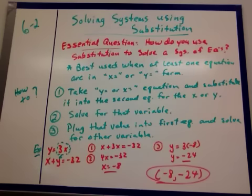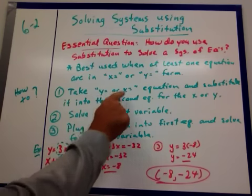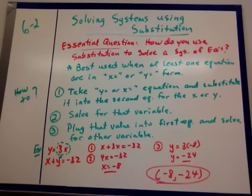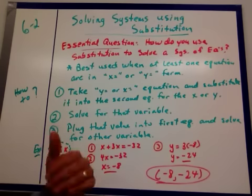How do we go about doing it? You take that y equal or x equal equation, and you substitute it into the second equation for that x or y letter, for that variable that it's equal to. Then solve for that variable, and then plug that value into the first equation and solve for the other variable. One, two, three.